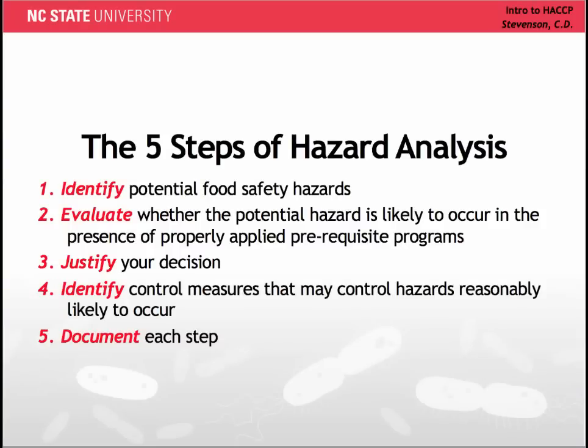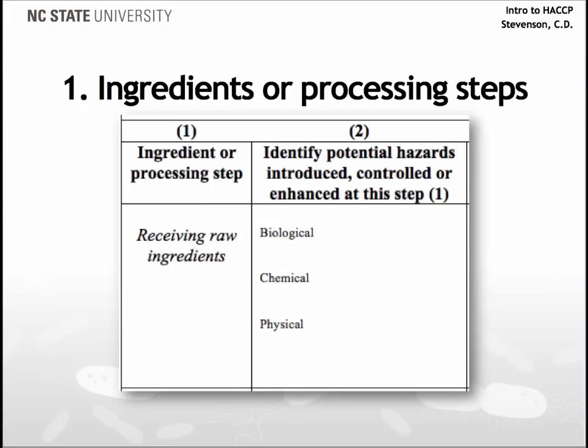Let's go back to the first step in hazard analysis. In order to identify potential food safety hazards, we need to focus on the first two columns in this worksheet. In the first column, the process steps from a verified flow diagram will be listed. Each ingredient addition step or process step must be listed. Each step from the flow chart must be examined to determine if there are any potential hazards that occur, that are introduced, or that are increased at that step.